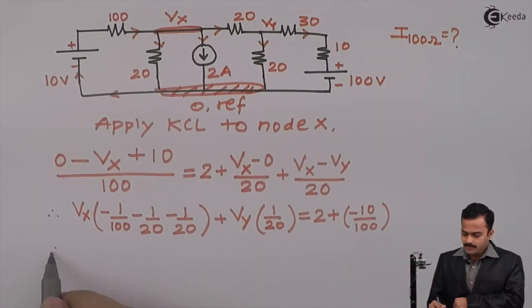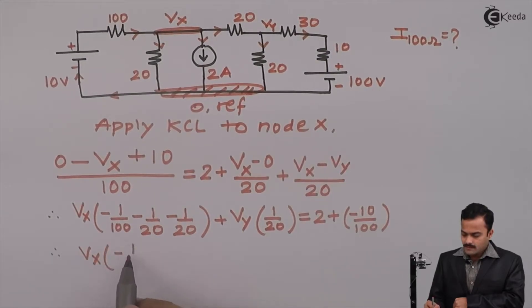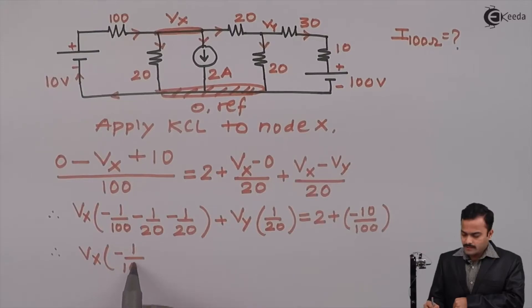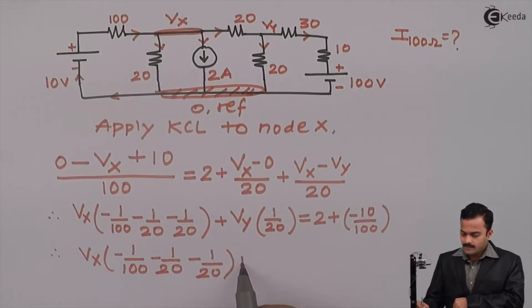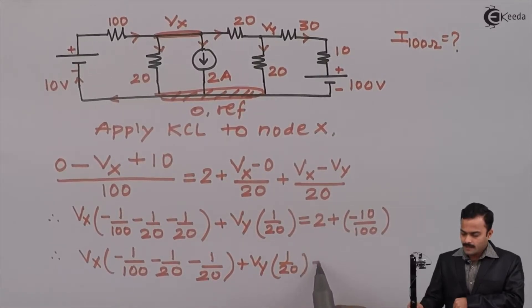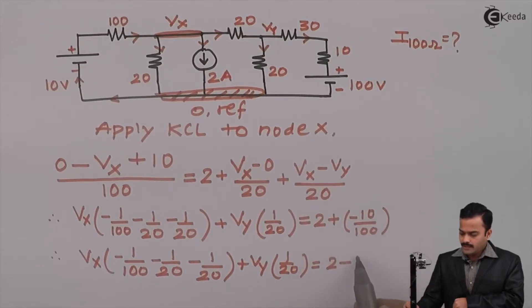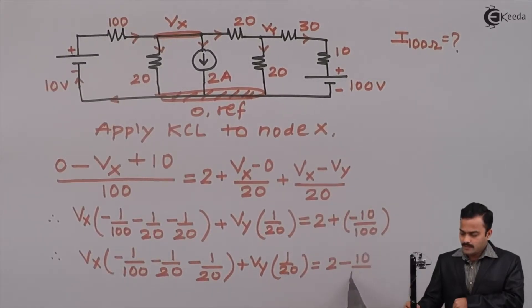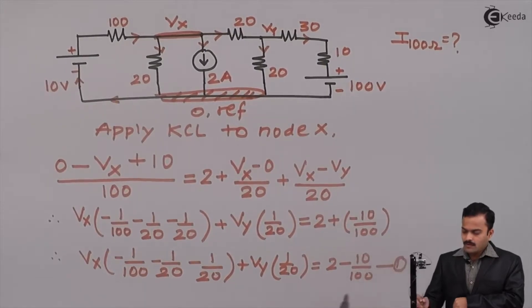So after simplifying, I will get Vx minus 1 by 100 minus 1 upon 20 minus 1 upon 20 plus Vy 1 by 20 equal to 2 minus 10 by 100. Equation number 1.